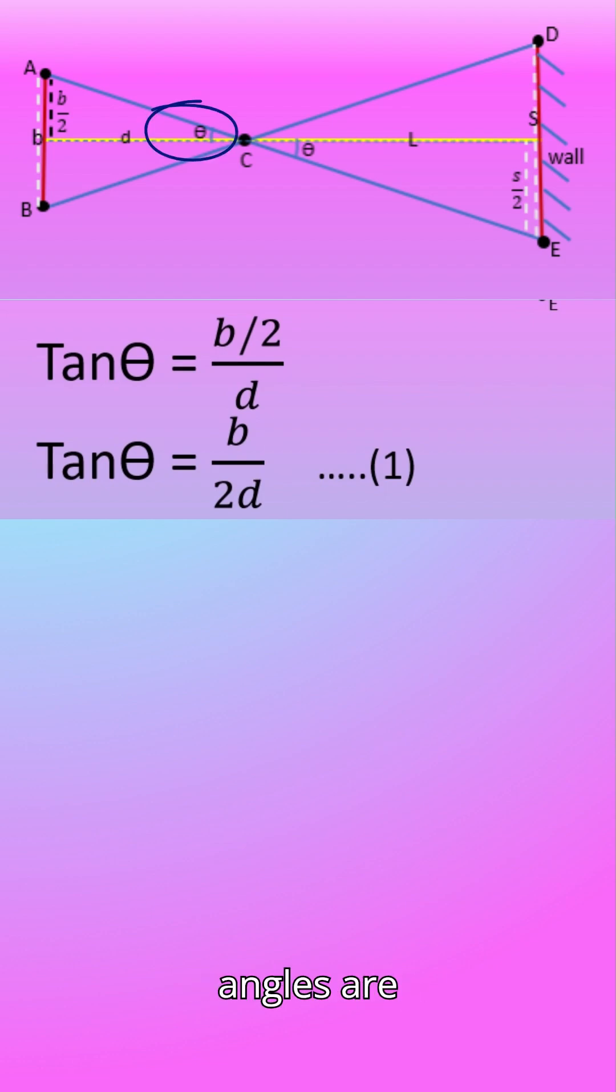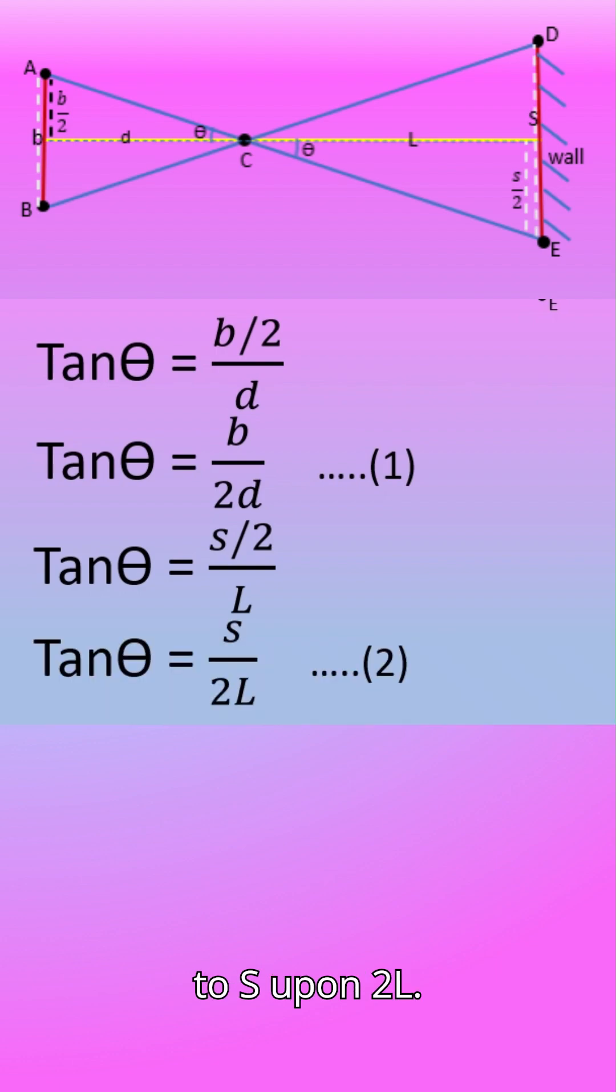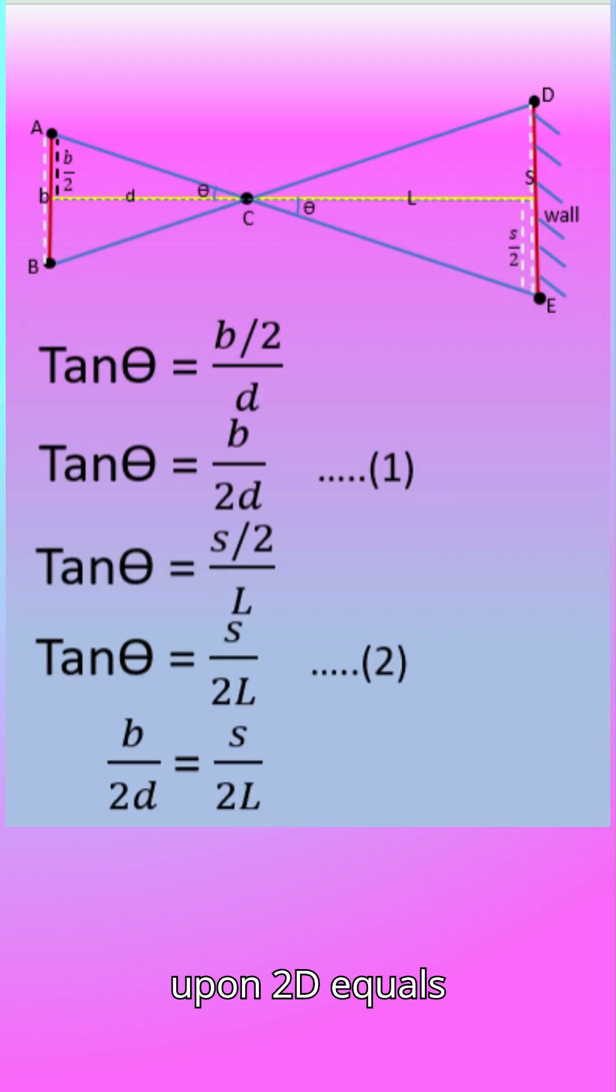From figure, the vertically opposite angles are same. So tan theta equals S upon 2 divided by L. That is equal to S upon 2L. This is equation 2. From equations 1 and 2, B upon 2D equals S upon 2L.